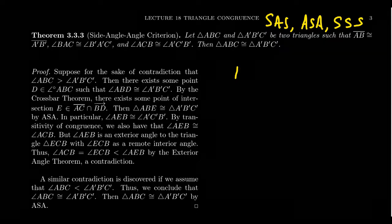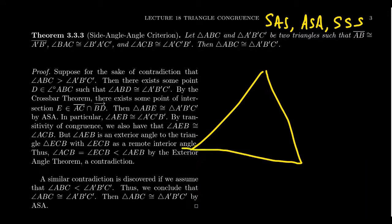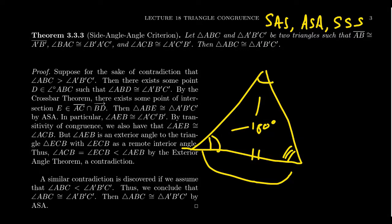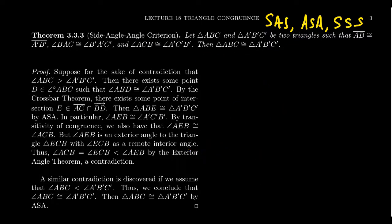We are trying to stay neutral with regard to the parallel postulate, so we can't make any assumptions about angle sums. In the Euclidean approach, knowing two angles lets you determine the third, converting a side-angle-angle situation into angle-side-angle. But in this video we are going to prove side-angle-angle in congruence geometry — neutral geometry without any notion of continuity — which gives a proof valid for both Euclidean and hyperbolic geometry.